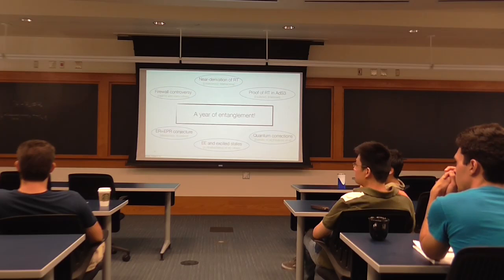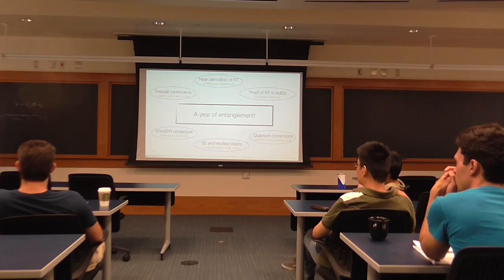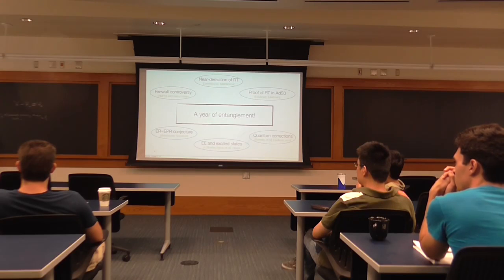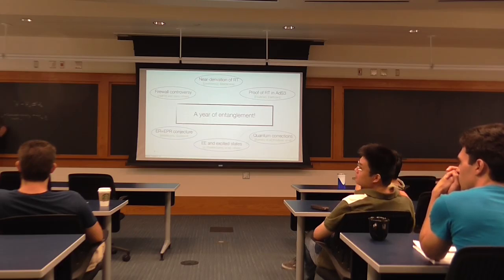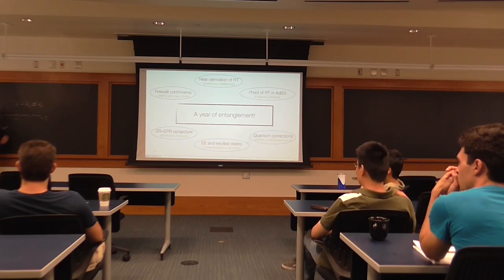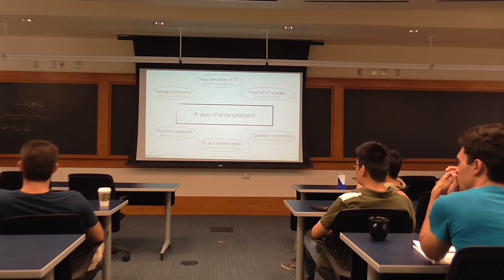Something very natural that you can do is construct what's called a reduced density matrix, labeled as rho_A, which is just the trace over states in B of rho. The entanglement entropy is the von Neumann entropy constructed from that density matrix: S_EE equals negative trace of rho_A log rho_A. There are similar generalizations known as Rényi entropies that involve traces of the reduced density matrix to some integer power N.